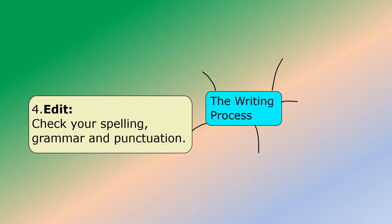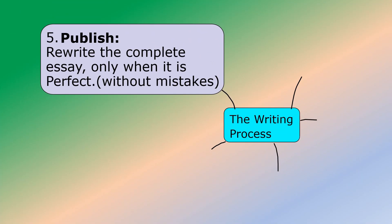Step four of the writing process: edit. Check your spelling, your grammar, and punctuation. Step five of the writing process: publish. Rewrite the complete essay only when it is perfect, without mistakes, so you can submit it for marking.